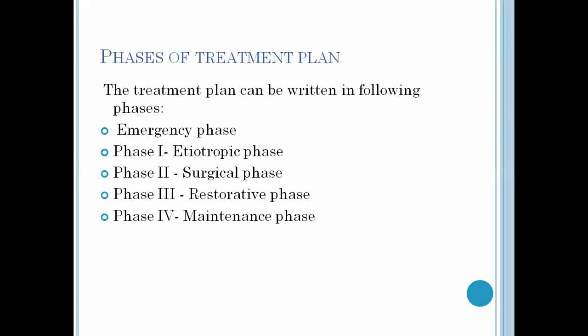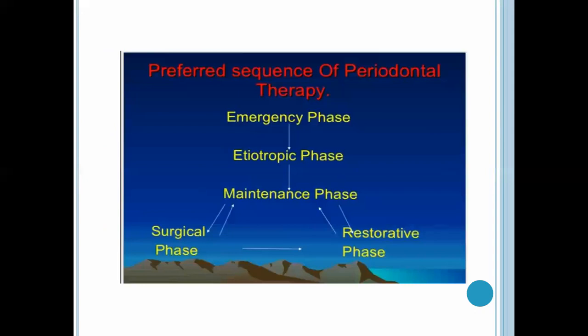The phases of the treatment plan are written in the following sequence: first is the emergency phase, second is phase one which is the etiotropic phase, phase two is the surgical phase, phase three is the restorative phase, and phase four is the maintenance phase. The preferred sequence of periodontal therapy is the emergency phase, followed by the etiotropic phase, then the maintenance phase, then the surgical phase followed again by maintenance, then the restorative phase and again the maintenance phase. Basically, after each phase there needs to be a maintenance phase for evaluating the patient's complaint and treatment done.